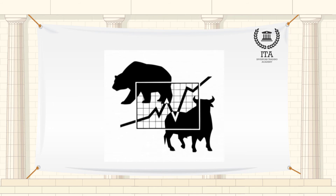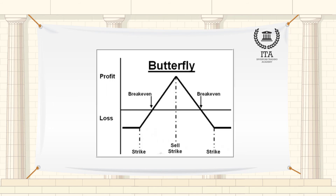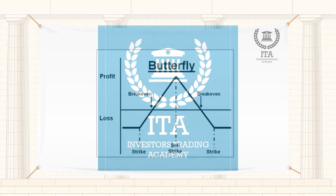The butterfly spread is a neutral strategy that is a combination of a bull spread and a bear spread. It is a limited profit, limited risk options strategy. There are three striking prices involved in a butterfly spread and it can be constructed using calls or puts.